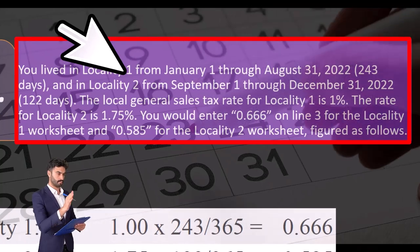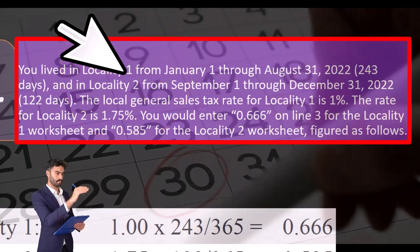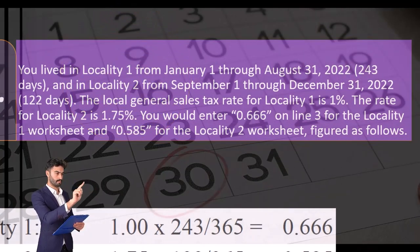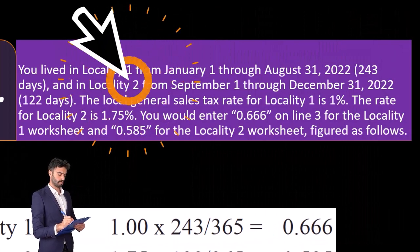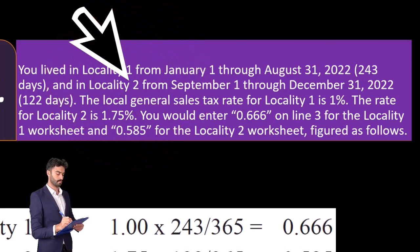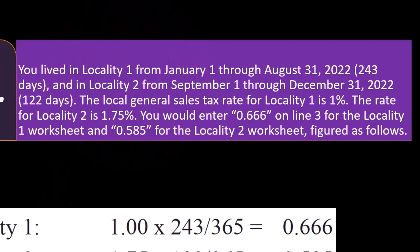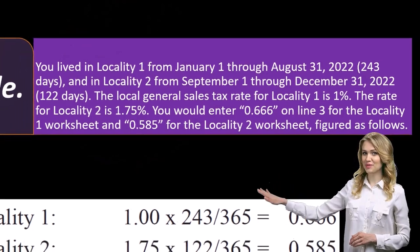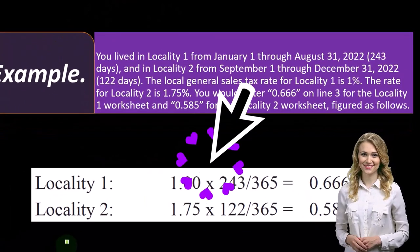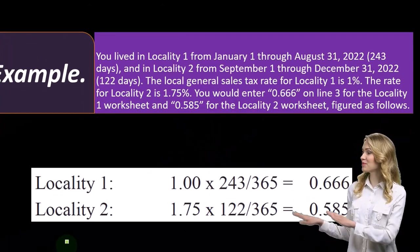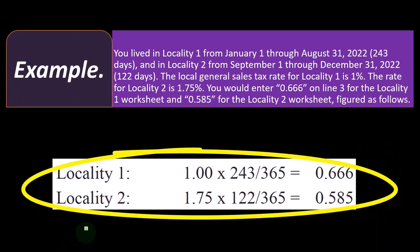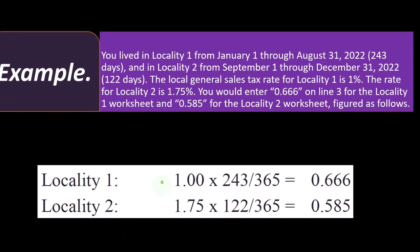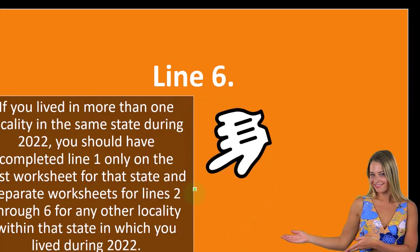Example: you lived in locality one from January 1st through August 31st, 2022 — 243 days — and in locality two from September 1st through December 31st, 2022 — 122 days. The local general sales tax rate for locality one is 1%, and for locality two is 1.75%. You would enter 0.666 on line three for the locality one worksheet, and 0.585 for locality two — again using each rate times its fraction of the year.